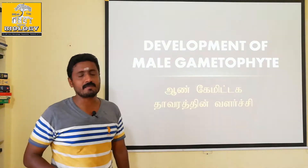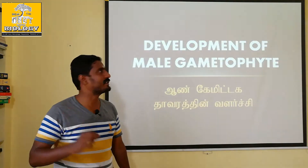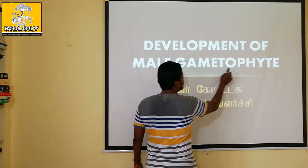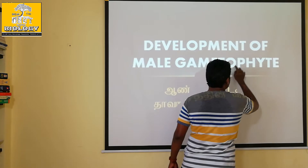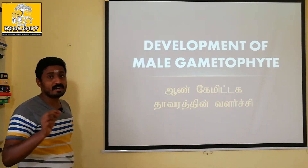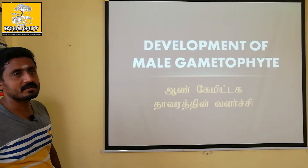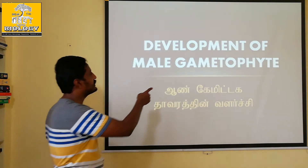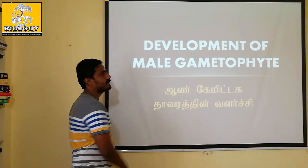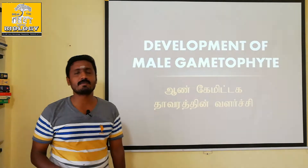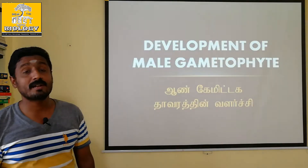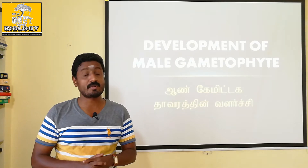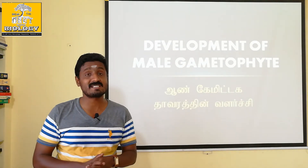The gametophyte is a plant structure in botany. This is how the gametophyte develops. Normally, this is a structure called the microsporangium. We are all learning about microsporogenesis. There is an anther, and the anther wall is found here.